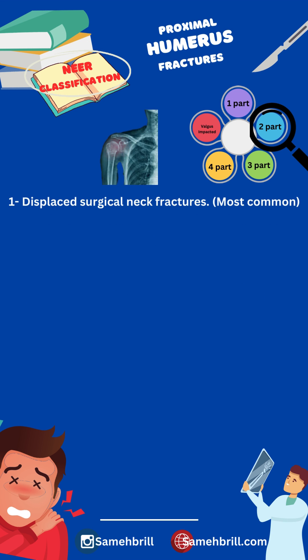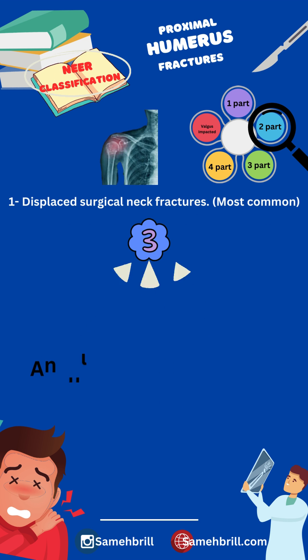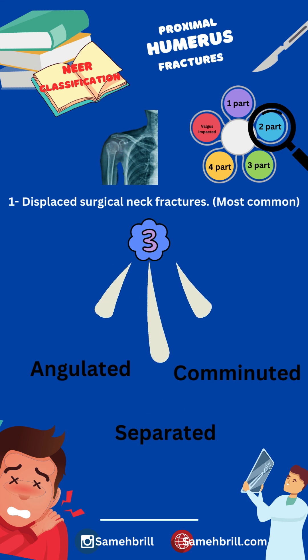Displaced surgical neck fractures are the most common two-part fracture pattern. NEAR describes three different subtypes: angulated type, separated type, and comminuted type.